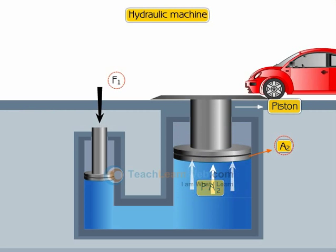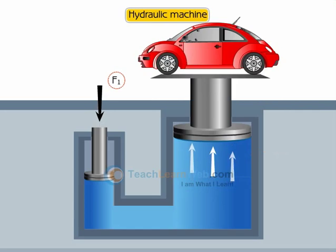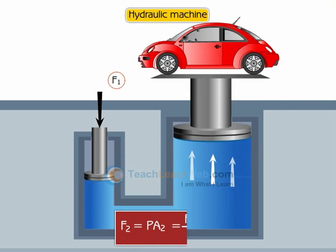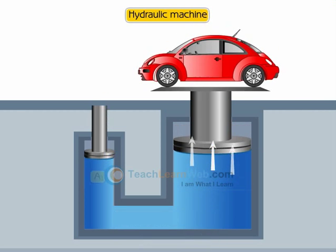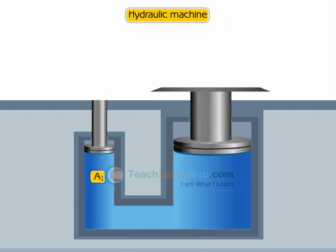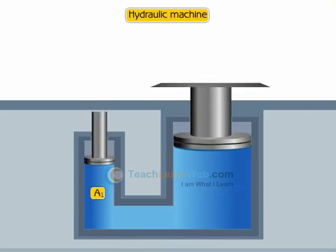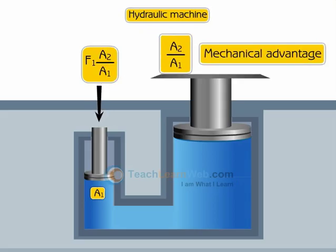The piston is capable of supporting a large weight, like a car placed on the platform. F2 equals P times A2, which equals F1 times A2 divided by A1. By changing the force at A1, the platform can be moved up or down. Thus, the applied force has been increased by a factor of A2 by A1, and this factor is the mechanical advantage of the device.